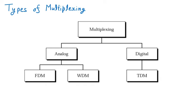The reverse of multiplexing is demultiplexing. Now, types of multiplexing: we have two categories — analog and digital. Analog signals are in terms of sine waves, while digital signals are binary, that is, zeros and ones.